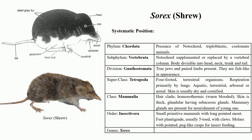Scent glands are located on the sides of their bodies. As their eyesight is generally poor, they rely on hearing and smell to locate their prey, particularly insects. They also feed on earthworms. Shrews are economically important for human beings as they are responsible for controlling the population of insects, acting as natural predators. This is about the characteristic features of Sorex, commonly known as shrew, or 'chichundari' in Marathi.